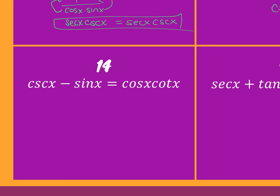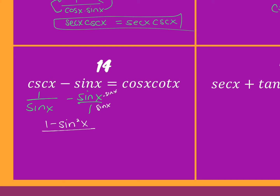Nate, you want to start it for us? I put one over sine of x. Sine of x is number one. And then I did a common denominator, which is sine of x. So I multiplied sine of x by sine of x, and I got sine squared x over sine of x.